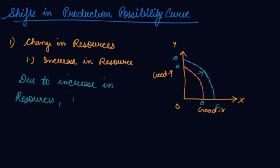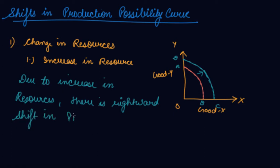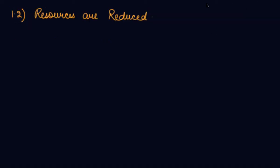There is a rightward shift in the PPC because you will be able to produce more of good X as well as good Y. So there is a rightward shift.